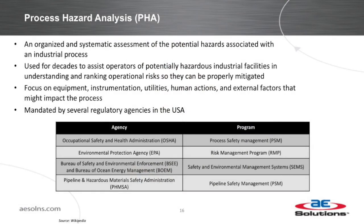The PHA process has been around for decades — it's a very organized, systematic approach to identifying process hazards and understanding the risk associated with them: how likely are they to occur, how bad would they be if they happened. The basic formula for risk is likelihood times consequence. The focus is on equipment, instrumentation, utilities, human actions, and other external factors. For many industries this is regulated — if you fall under OSHA PSM, EPA's RMP program, or some offshore and pipeline sectors, you're required to do some level of process hazard analysis. It's been around for a long time and well accepted by operations groups as part of an ongoing risk management and safety program.